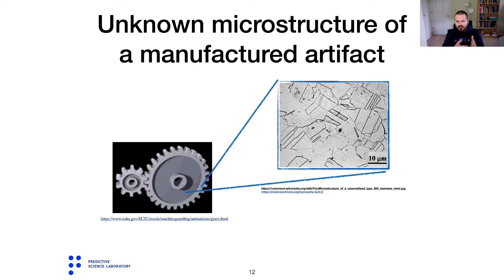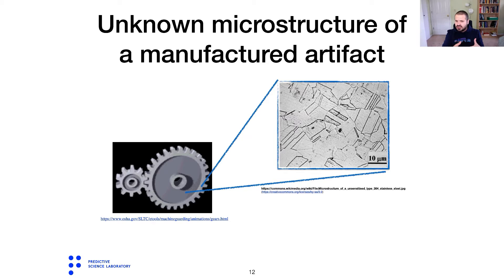Now if you do it again on the second bevel gear coming out of your manufacturing process, you are of course going to see a different picture. And if you do it a third or fourth time, you will see a different picture each time. So in that sense, your uncertainty about the microstructure of the bevel gear is an example of aleatory uncertainty — it is true randomness. Every time you measure a different gear, you see a different picture.